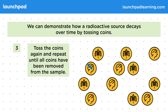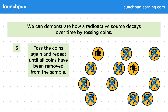Keep tossing the remaining coins each time, removing those that land on heads until you have no coins left. Each toss of the coins represents a certain time period — that could be one year, for example. This experiment demonstrates how many nuclei decay with each time period and demonstrates just how random the process is.